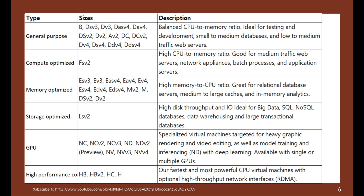For GPU optimized VMs — the N series, including NC, NCv2, and others — these are specialized virtual machines targeted for heavy graphic rendering, video editing, model training, and deep learning inferencing. They are available with single or multiple GPUs. The last category is high performance compute — the HB series or H series — featuring the fastest and most powerful CPUs with optional high-throughput network interfaces.